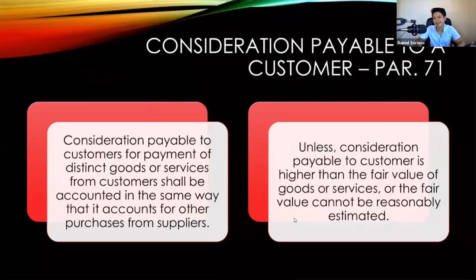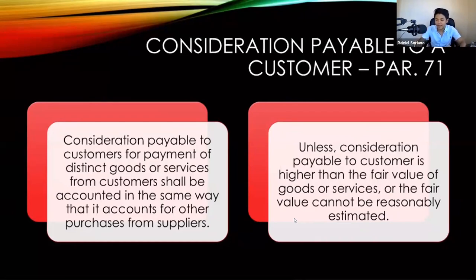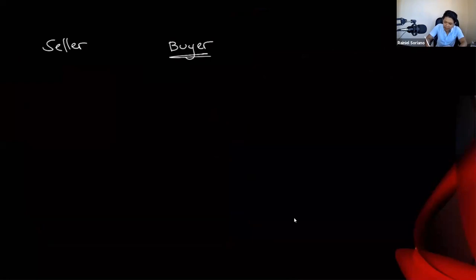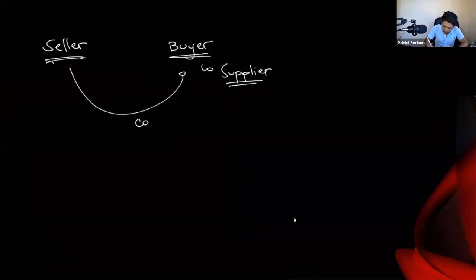The fourth consideration is consideration payable to a customer. According to paragraph 71, payment for distinct goods or services from customers shall be accounted for in the same way as other purchases from suppliers — unless the consideration payable to a customer is higher than the fair value of the goods or services, or if the fair value cannot be reasonably estimated.